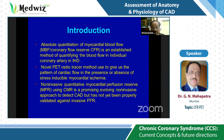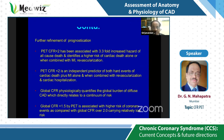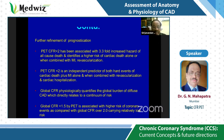CMR-based MPR has not yet been properly validated against invasive FFR. For prognostication, PET CFR less than 2 has been associated with a 3.3-fold increased hazard of all-cause death and identifies a higher risk of cardiac death alone or combined with MI or revascularization. PET CFR less than 2 is an independent predictor of hard events. Global CFR physiologically quantifies the global burden of diffuse CAD: global CFR less than 1.5 by PET carries higher coronary event risk, while global CFR over 2.0 carries relatively low risk.